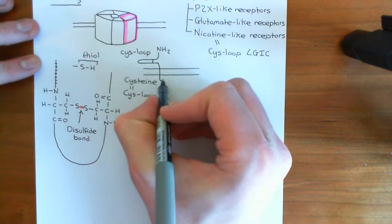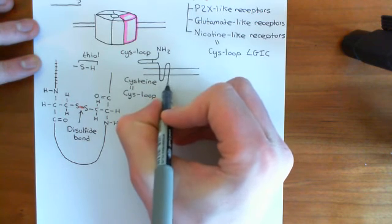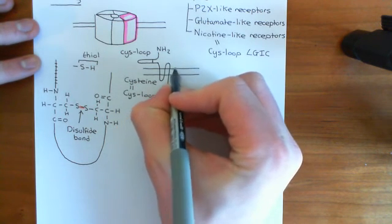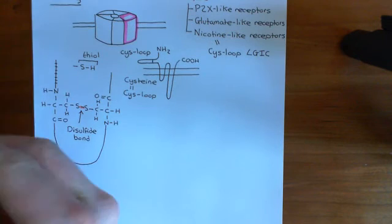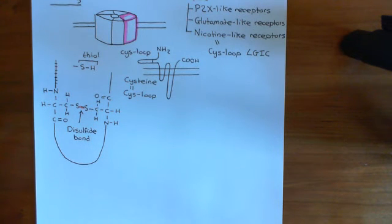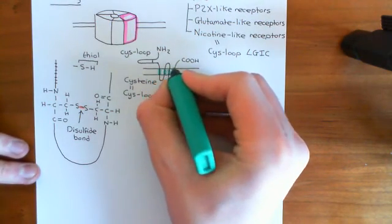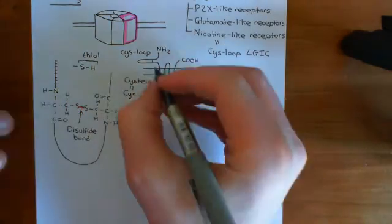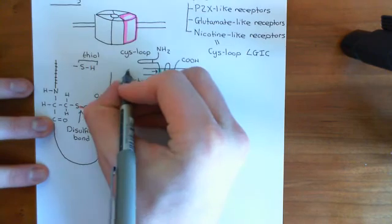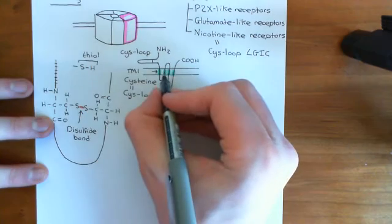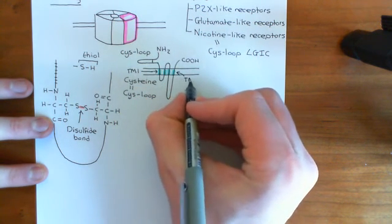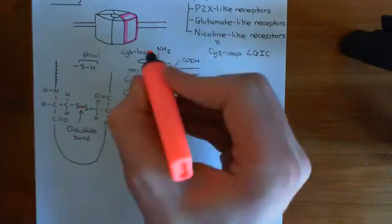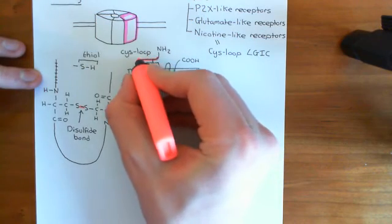Then we have the first membrane-spanning alpha helix, the second membrane-spanning alpha helix, a third membrane-spanning alpha helix, a large intracellular loop, a fourth membrane-spanning alpha helix, and then the carboxylic acid terminus. The four membrane-spanning alpha helices are called transmembrane domain 1 (TM1), TM2, TM3, and TM4. The cys-loop in the extracellular domain is an extremely important structure, after which the entire superfamily of ligand-gated ion channels is named.